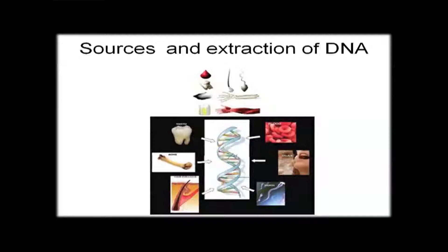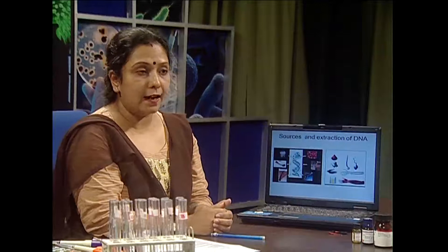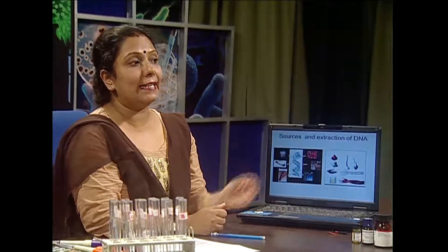DNA can also be extracted from sputum, semen, and from bacterial and fungal sources. In case of bacteria, you can extract the chromosomal main DNA as well as circular plasmid DNA. But in all the cases, the strategies of extraction vary according to the source.